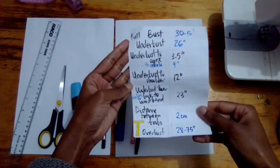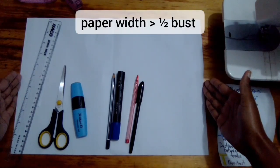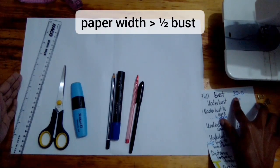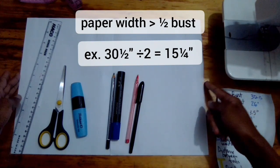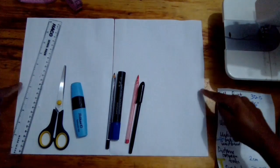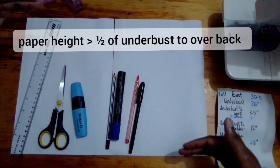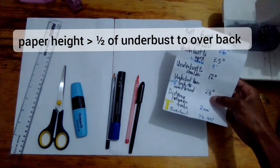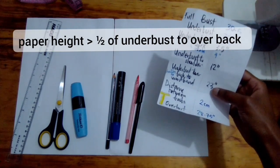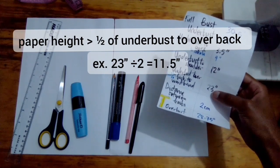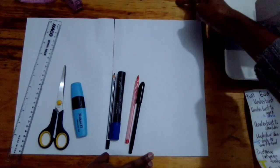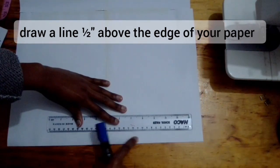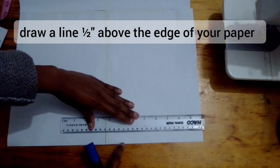Your paper needs to be just over half your bust measurement. For example, my full bust measures 30.5 inches. Half of that is 15 inches, so my paper needs to be at least 16 inches wide. The height of the paper needs to be half the under bust to over back measurement, which is for me 23 inches divided by two—12.5 inches. So my paper should be at least 12.5 inches plus more. First, you need to do a straight line at the bottom here, make it about half an inch from here because you need to add your seam allowances.